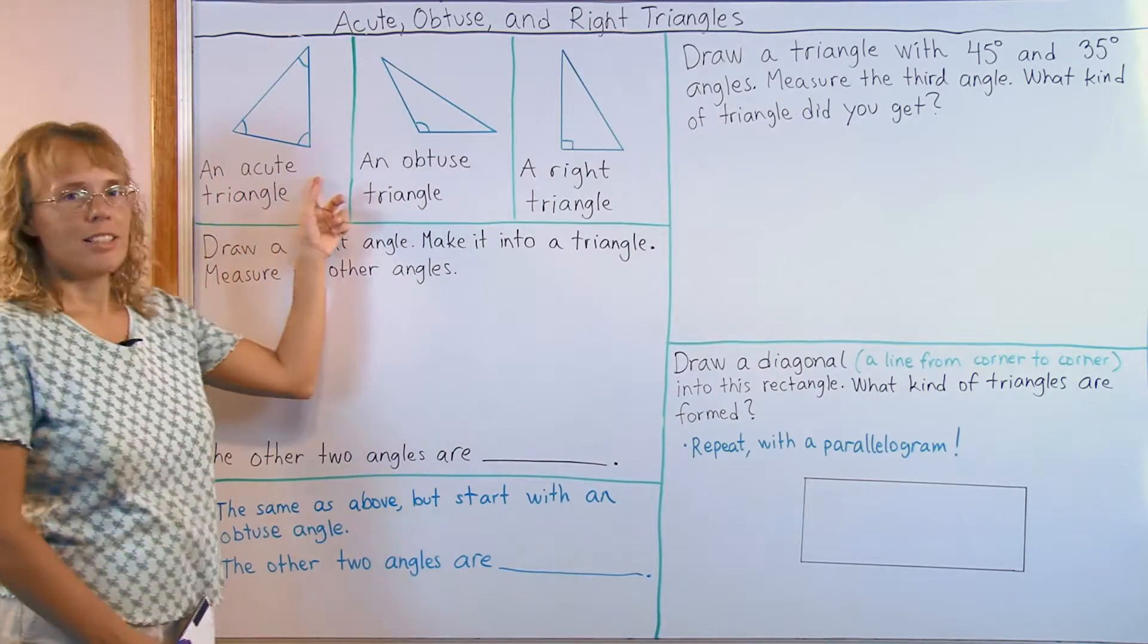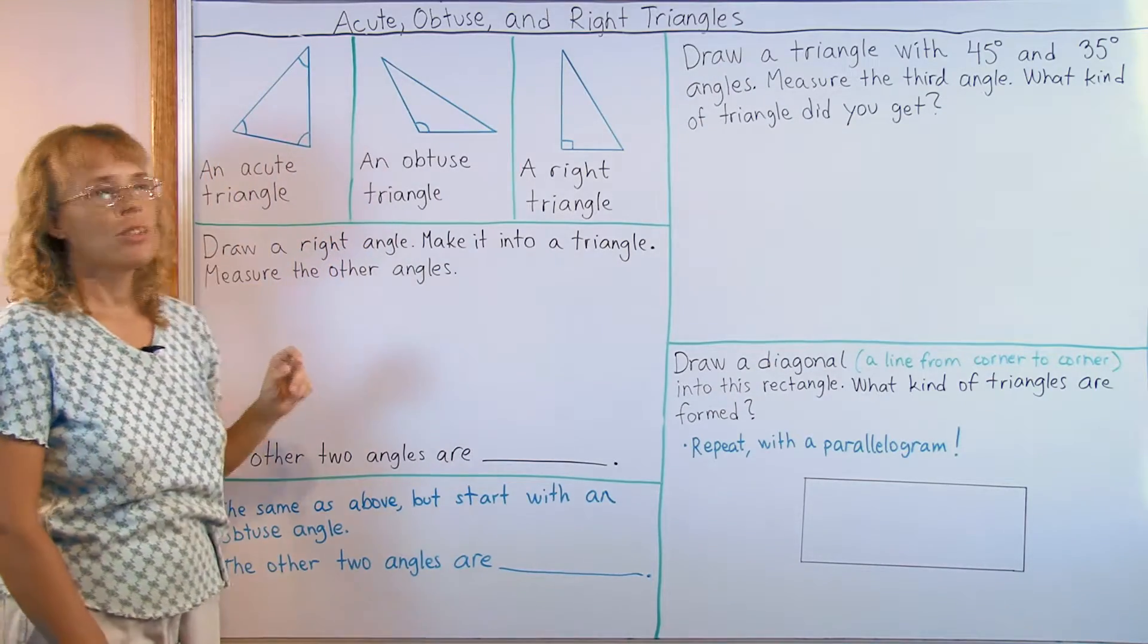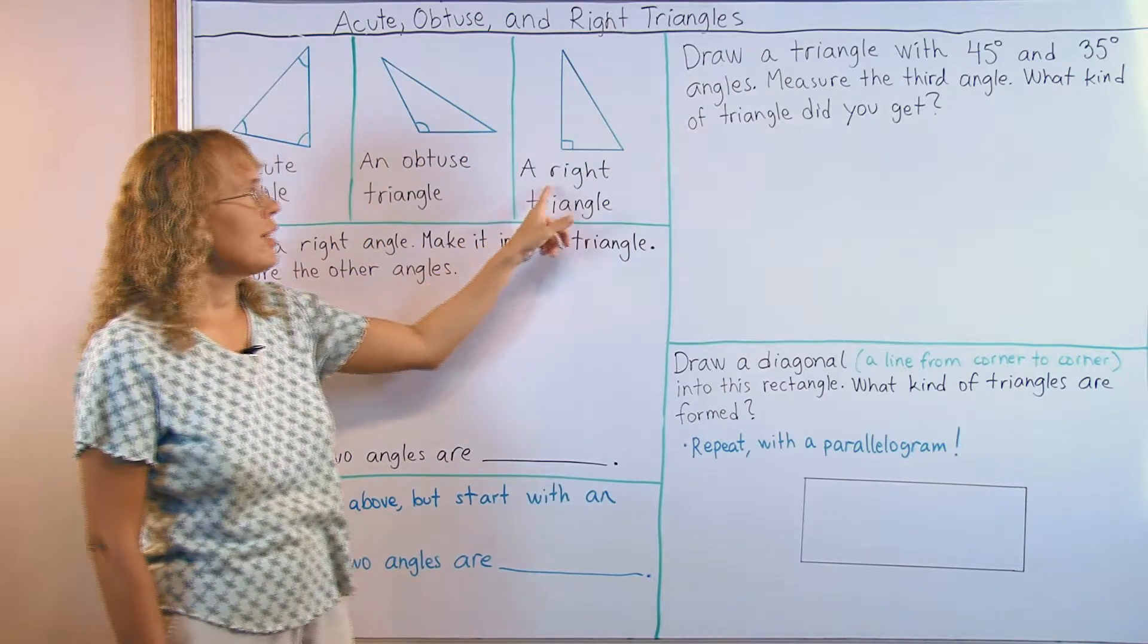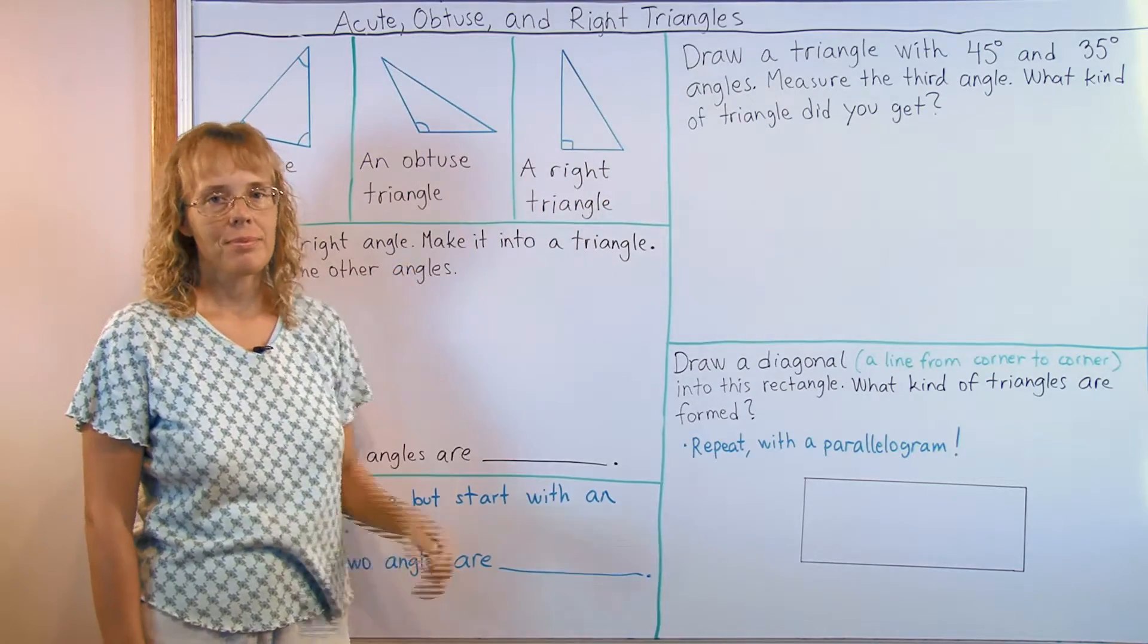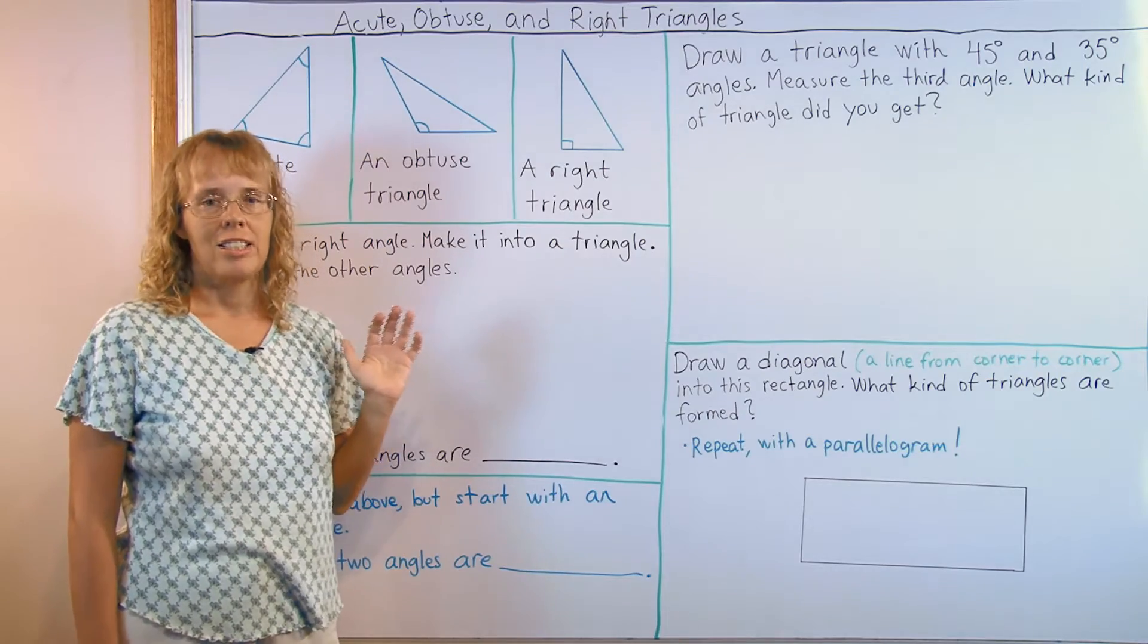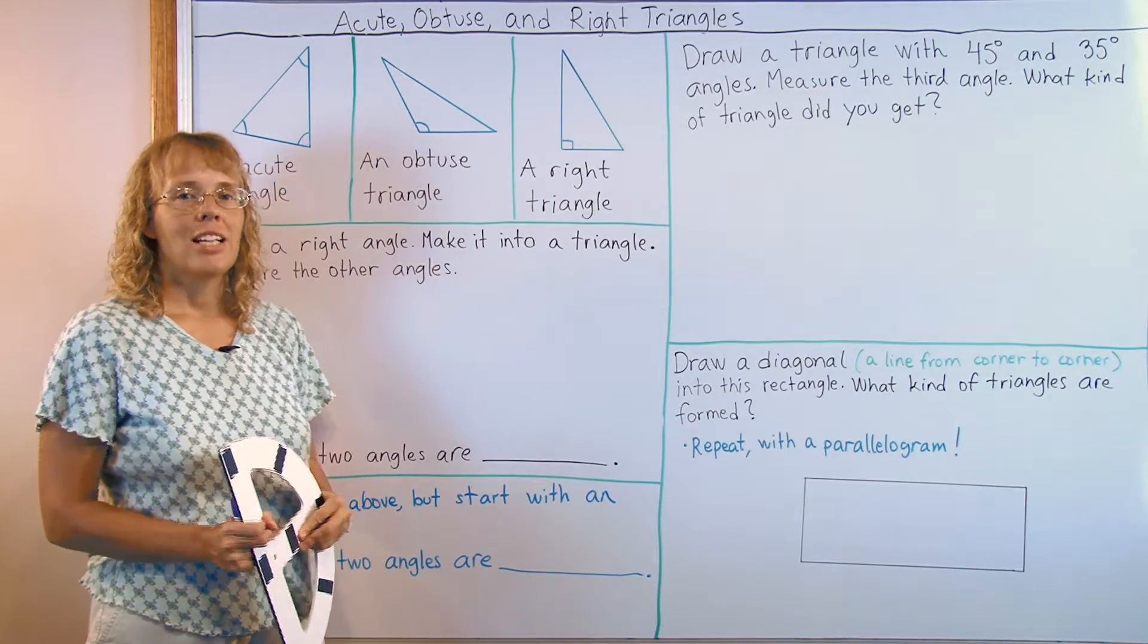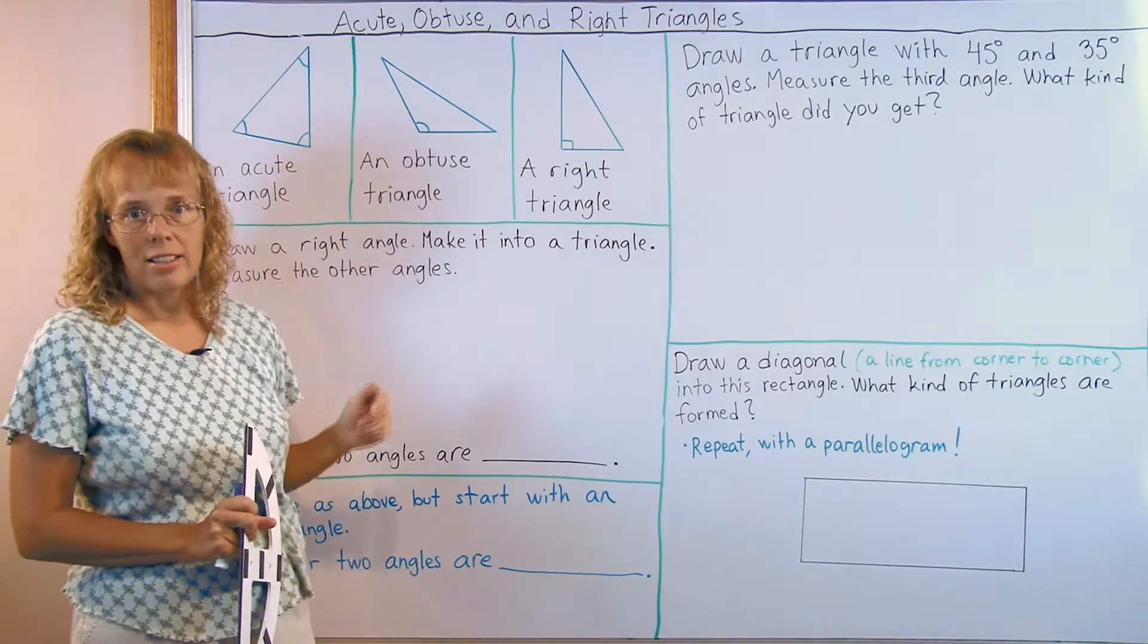Now here's an acute triangle. This means that all of its angles are acute. An obtuse triangle means that the triangle has one obtuse angle and a right triangle means that the triangle has one right angle. But to make these definitions stick in students' minds I like to use drawing exercises where they will do hands-on work and actually explore and learn more about the angles in these different kinds of triangles.